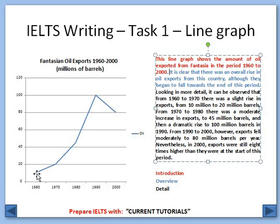At the start of the period it was 10 million barrels, and in 2000 it is 80 million barrels. So we can see that in 2000 the exports were still 8 times higher than they were at the start of the period.